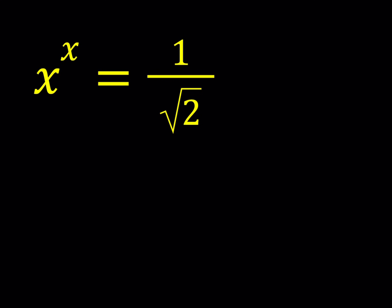Think about two functions: y equals x to the power x and y equals 1 over square root of 2. Obviously the second one is a linear function which is a horizontal line. The first one is actually much more interesting, of course.